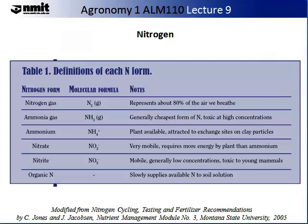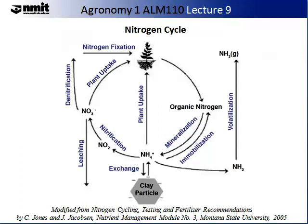Nitrogen forms include nitrogen gas, ammonium gas, ammonium, nitrate, nitrite and organic nitrogen. Nitrogen cycling consists of nine major processes: plant uptake, exchange, nitrification, denitrification, volatilisation, mineralisation, immobilisation, nitrogen fixation and leaching. Each of these processes and the effects they have on each other will influence the amount of plant-available nitrogen and hence yield.